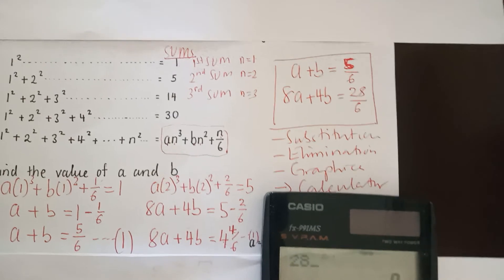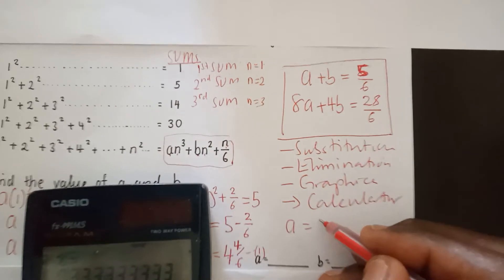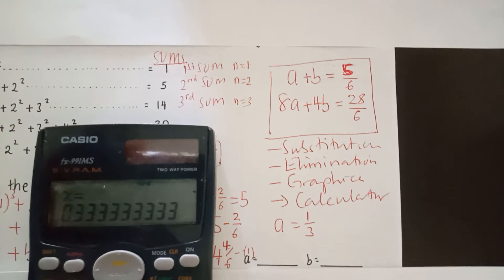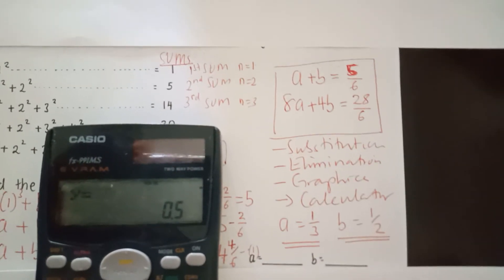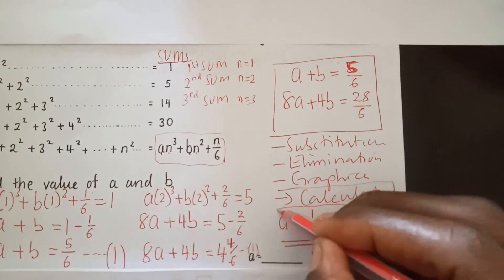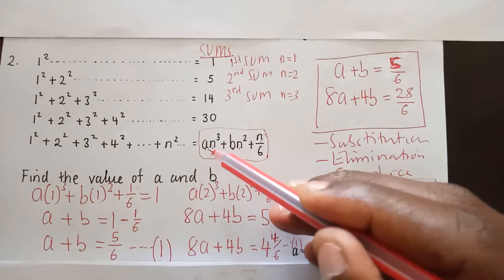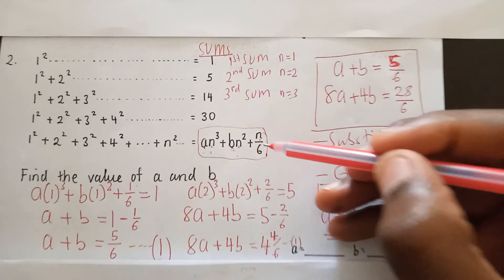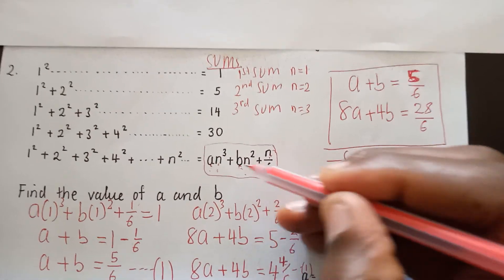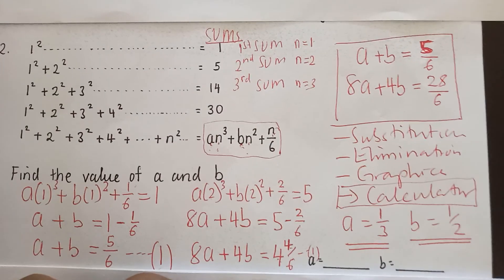For the second equation, the value of a is eight, b is four, and c is 28 over six. I get a equals one over three and b equals one half. So this is the value of a and this is the value of b, using the calculator method. Whenever we have a sequencing question where we are given the formula and there are two unknowns, we make two simultaneous equations and solve them. If there are three unknowns — a, b, c — then you will need three simultaneous equations. Thank you for watching. My name is Mr. Ishengoma.